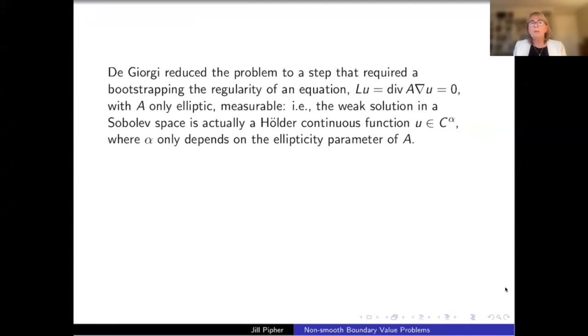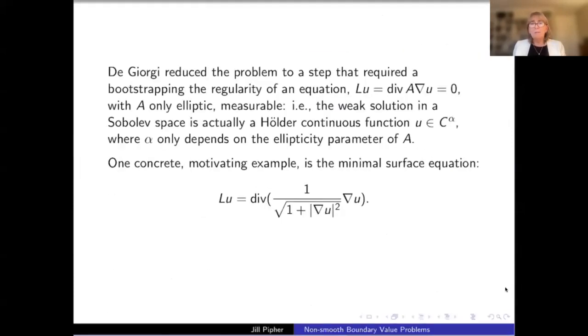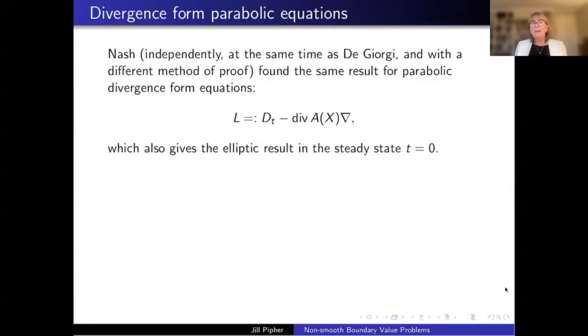And so De Giorgi started with a weak solution in the Sobolev space and needed to actually prove that you can bootstrap this regularity and show that actually you had a Hölder continuous function here, where in fact, the rate of continuity, the alpha only depends on the ellipticity parameter, the lambda for the matrix. And one concrete motivating example for De Giorgi in particular was this minimal surface equation.